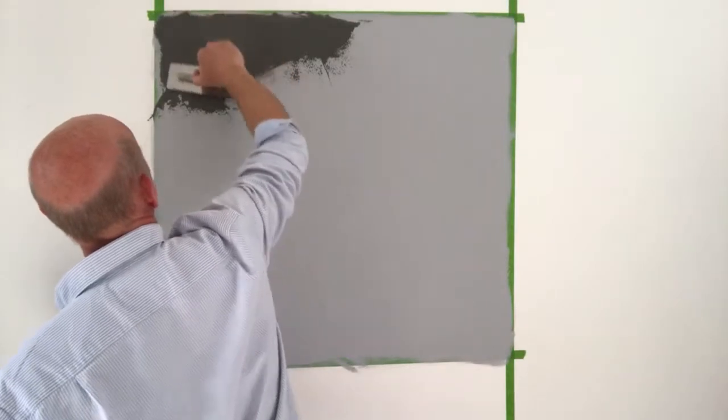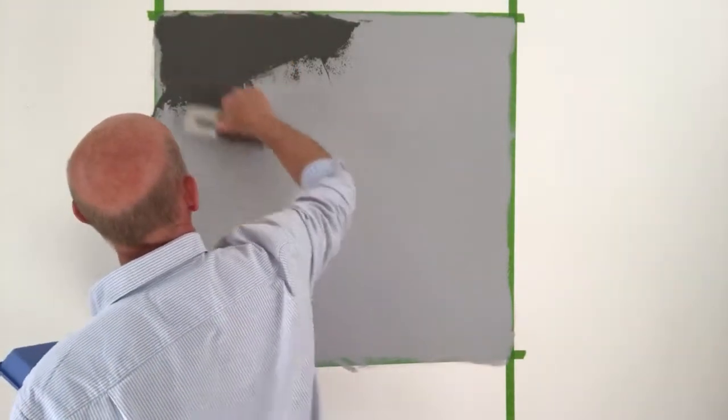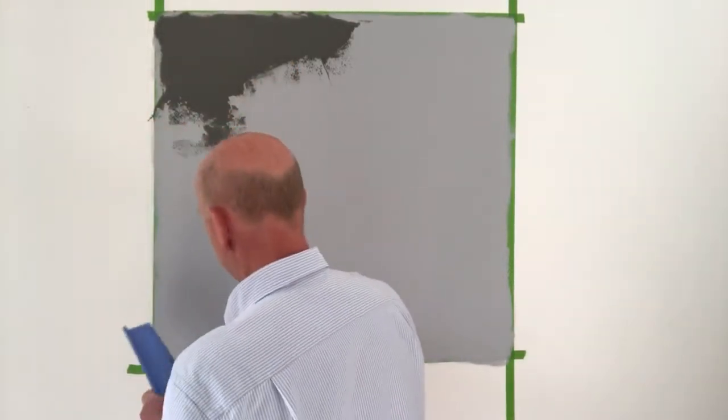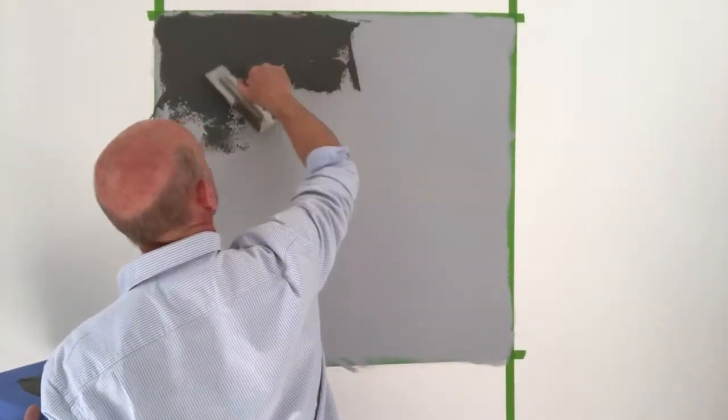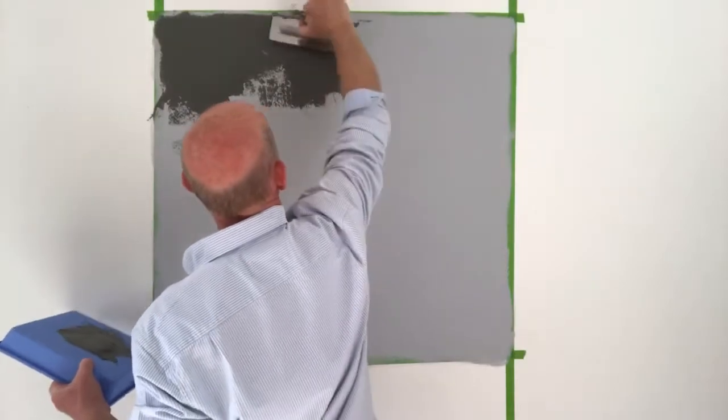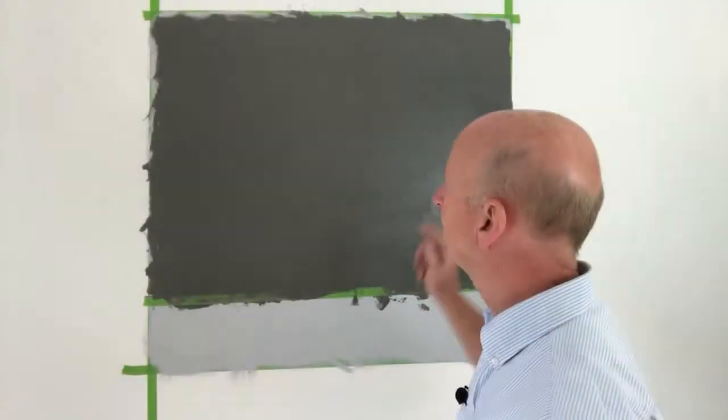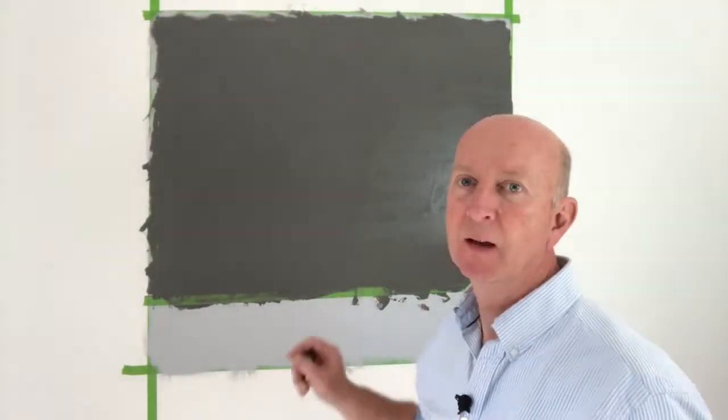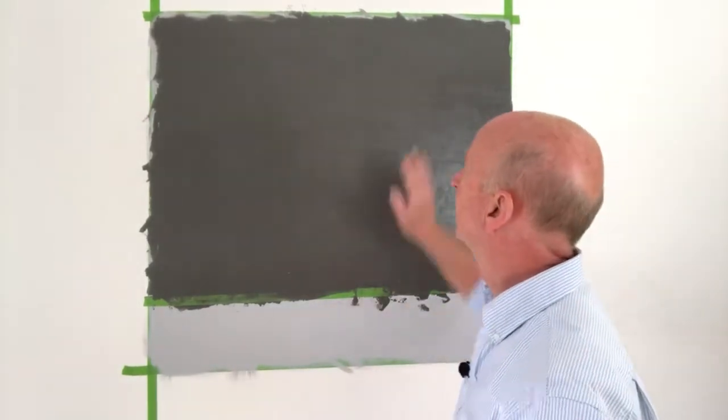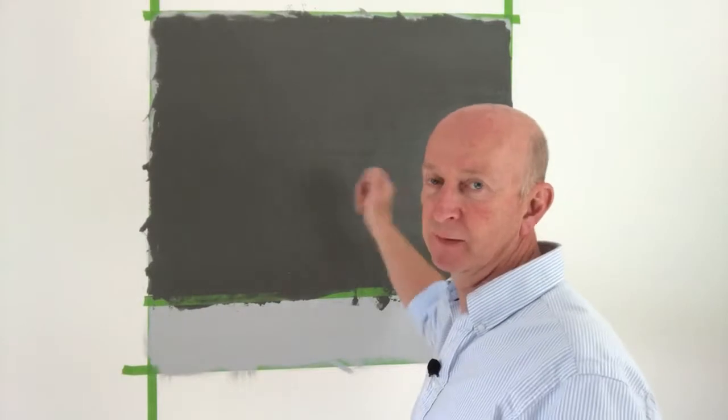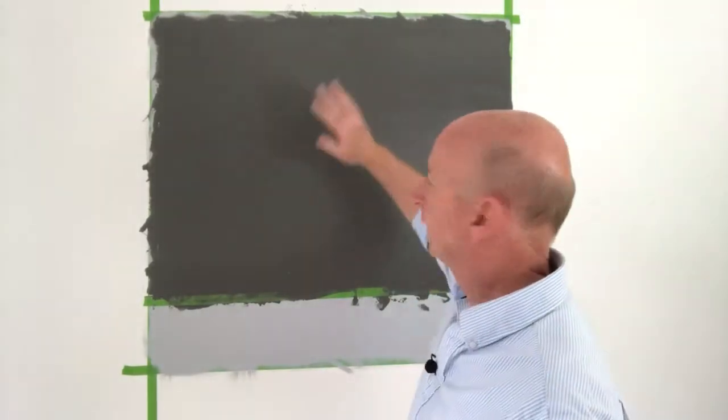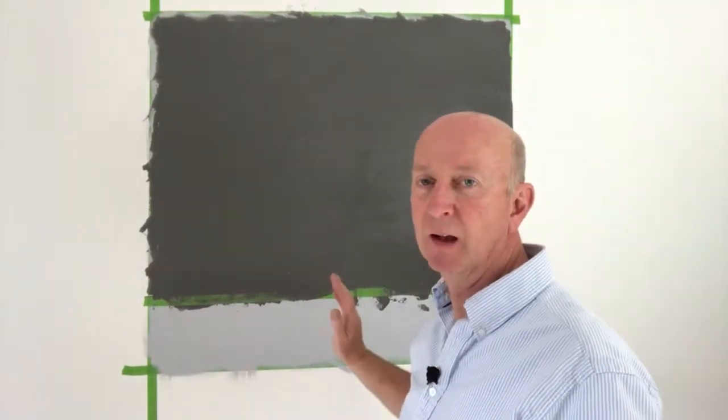Once you get the hang of it, you can get in a swing of it. You get probably sort of a millimeter thick while applying it on the wall. Okay so that's my finished area covered. Now I need to let that start to go off a bit before we actually start to trowel it just to smooth it out and create the ridges, create the effects.